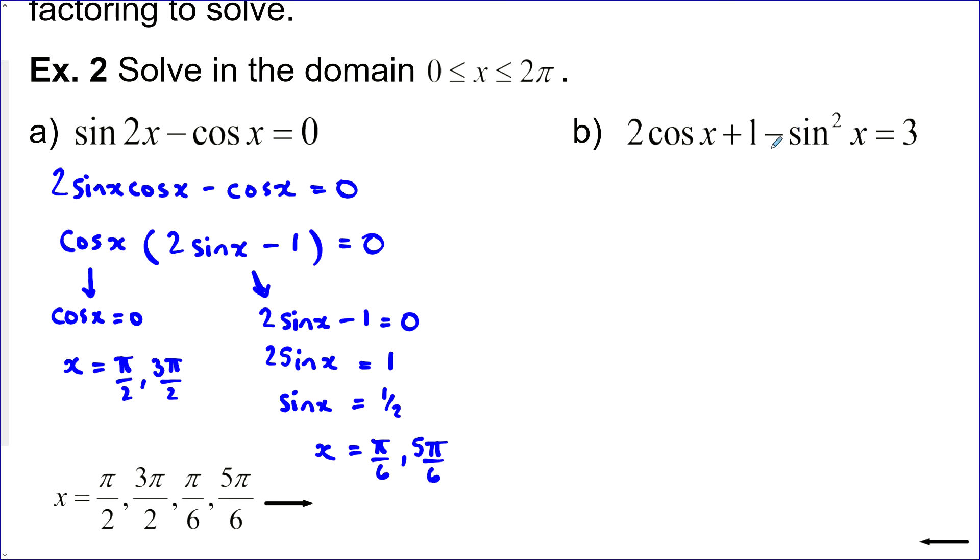In fact, 1 minus sine squared x is equal to cos squared x. So I'm going to use an identity and sub that part out. Now I've got everything in cos, in terms of cos and constant here. And this looks like a quadratic. I'm going to move it all to one side.